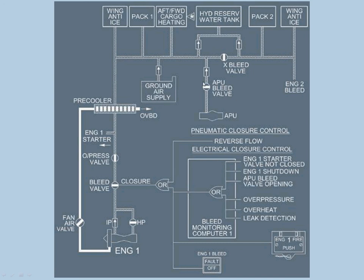Engine two bleed system is the same as engine one. Components served include: wing anti-ice from pack two on the right side, hydraulic reservoir, water tanks, and cargo heating from pack one; and wing anti-ice from the left engine.